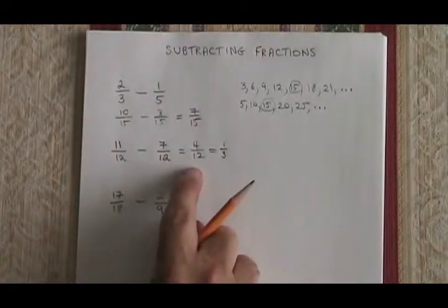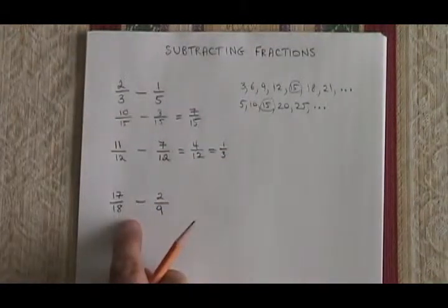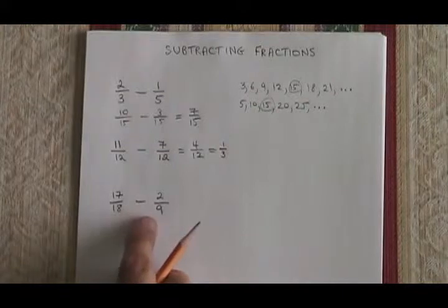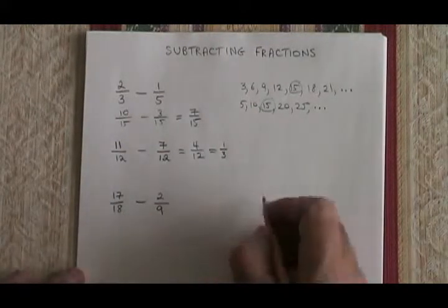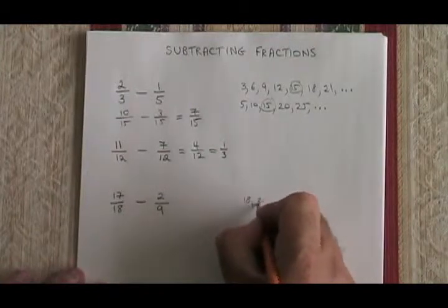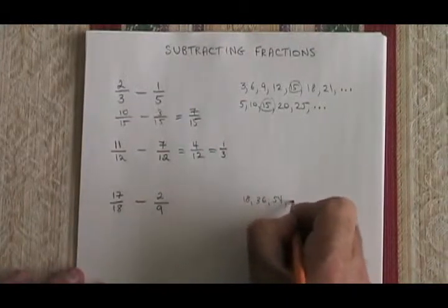It's not always so easy, though. In this case, we have 17 over 18 minus 2 over 9. If we list the multiples of 18 and 9, we get 18, 36, 54, and it keeps going.